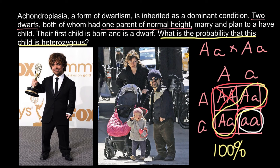IVF is a technique where we take an egg cell and sperm and fertilize the egg cell. Usually not just one egg cell is taken but two, three, four or more. When such egg cells start to divide, one cell can be taken for genetic testing, and only those embryos that do not carry this dominant allele can be selected for transfer.